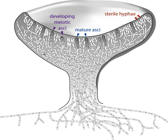Similar to a Kleistothaceum, a Gymnothaceum is a completely enclosed structure containing globose or pear-shaped, deliquescent ASCI. However, unlike the Kleistothaceum, the peridial wall of a Gymnothaceum consists of a loosely woven tuft of hyphae, often ornamented with elaborate coils or spines. Examples are Gymnoascus, Talaromyces, and the dermatophyte Arthroderma.